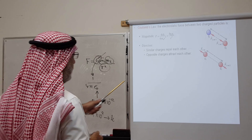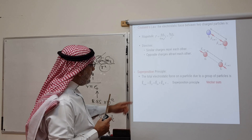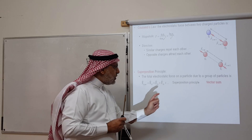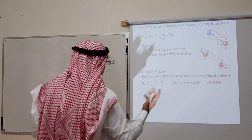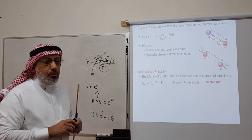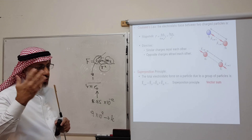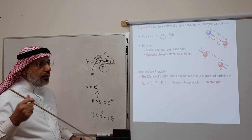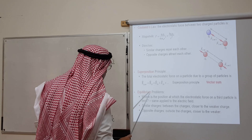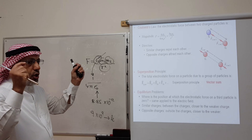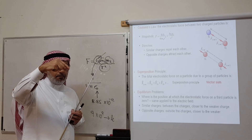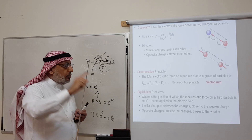When we have more than two particles, we apply the superposition principle: the net electrostatic force on any particle equals the vector sum of the individual forces due to all other particles. Electricity is heavily based on vector quantities, so you need to be comfortable with vectors. A common problem type involves equilibrium: two particles are fixed in space and you place a third particle somewhere so that the net force on it is zero.